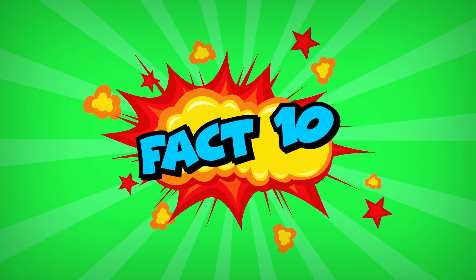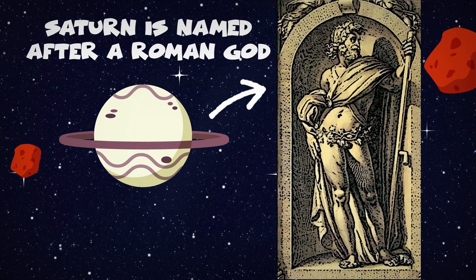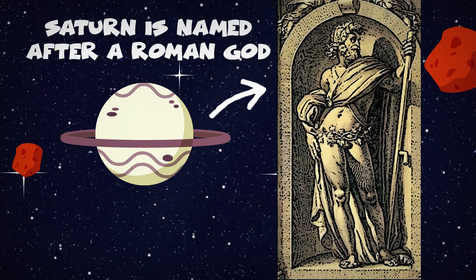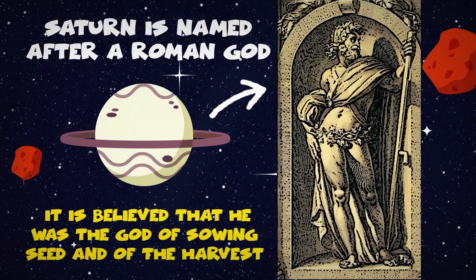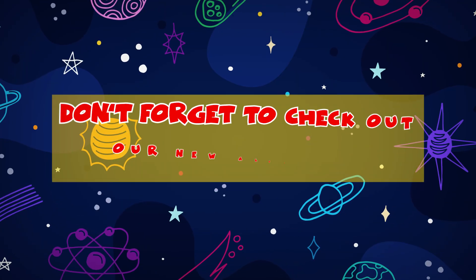Fact number 10. Saturn itself is named, like all the planets, after a Roman god. Saturn was a rather mysterious god, but it is believed that he was the god of sowing seed and of the harvest.